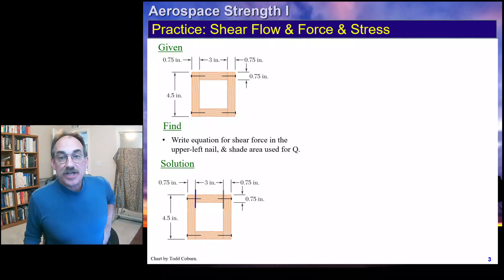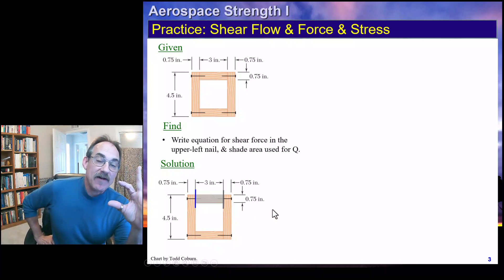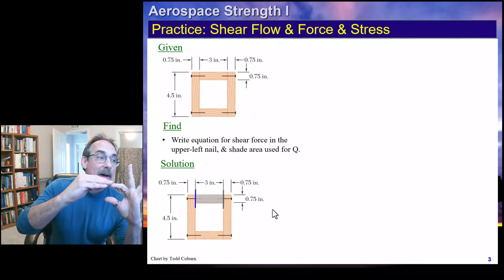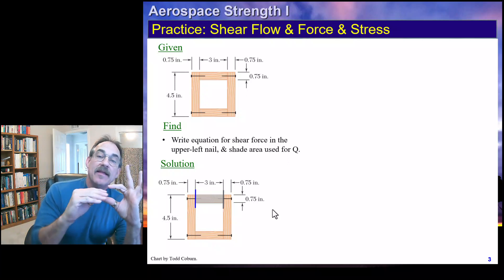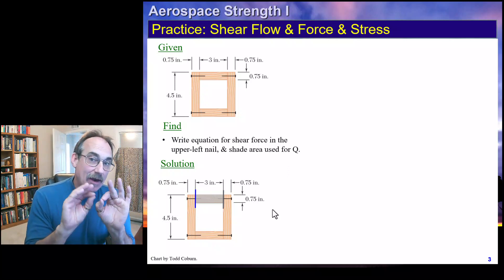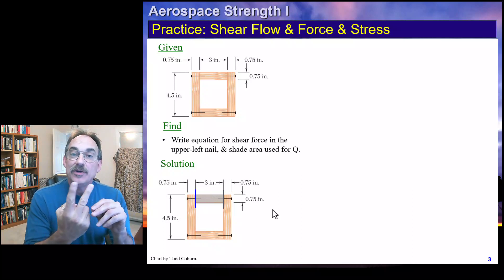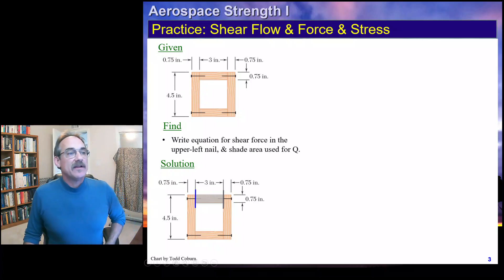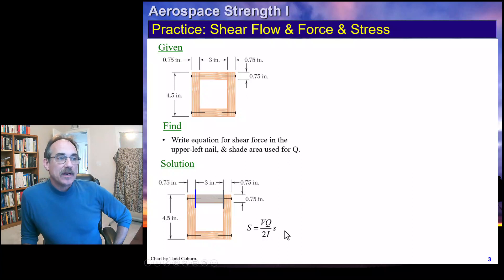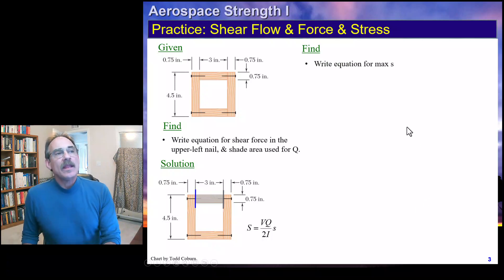We shade the area and calculate Q for that piece: 3 inches times 0.75 inches times the distance from the centroid to the middle of that piece. That distance is 4.5 over 2 minus 0.75 over 2 — the y-bar we need in the area times y-bar equation. Once we have Q, the shear flow is VQ/I, but since we have two load paths — two nails we cut — we divide by two, then multiply by the nail spacing going into the page to get the shear force.